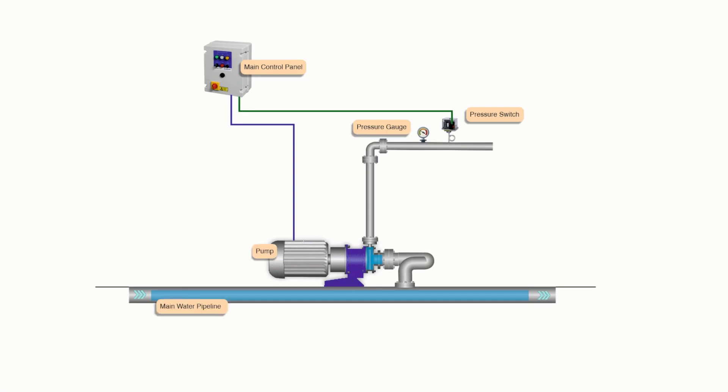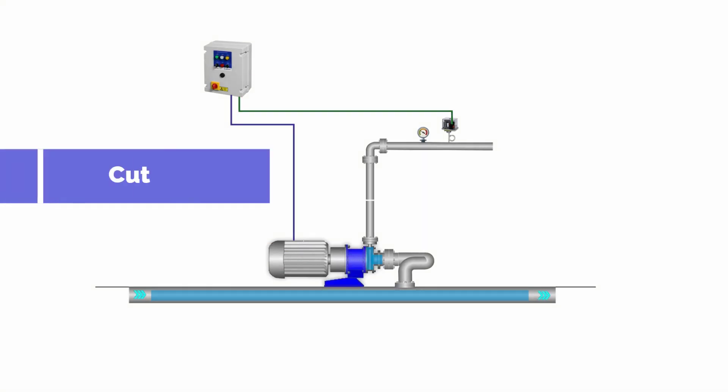The pressure switch plays a crucial role in monitoring and maintaining the system pressure. The pressure switch is set with two pressure values: cut-in and cut-out.